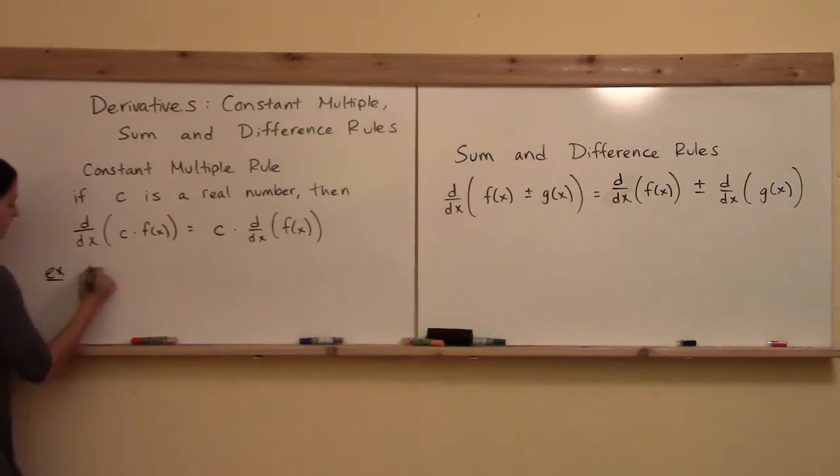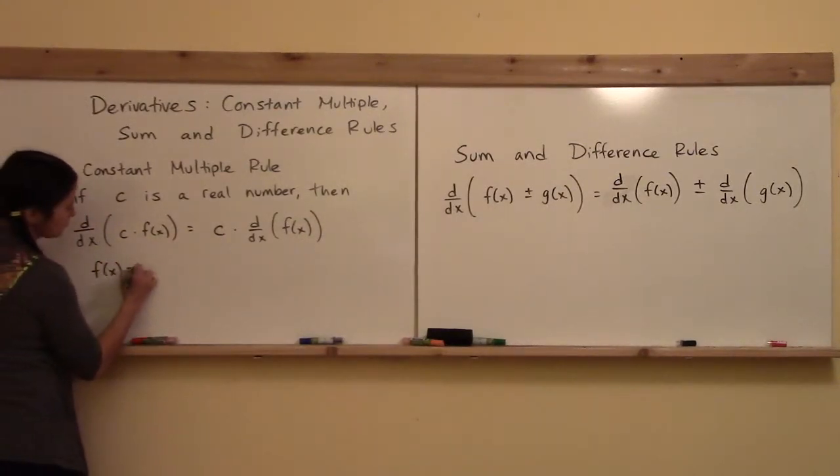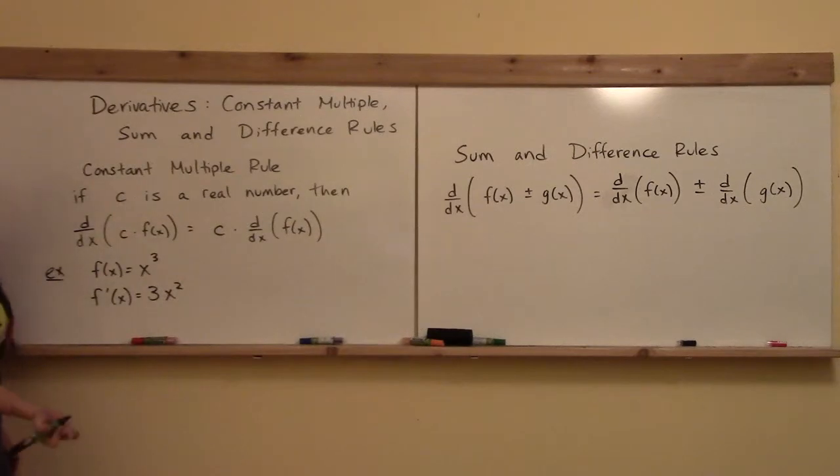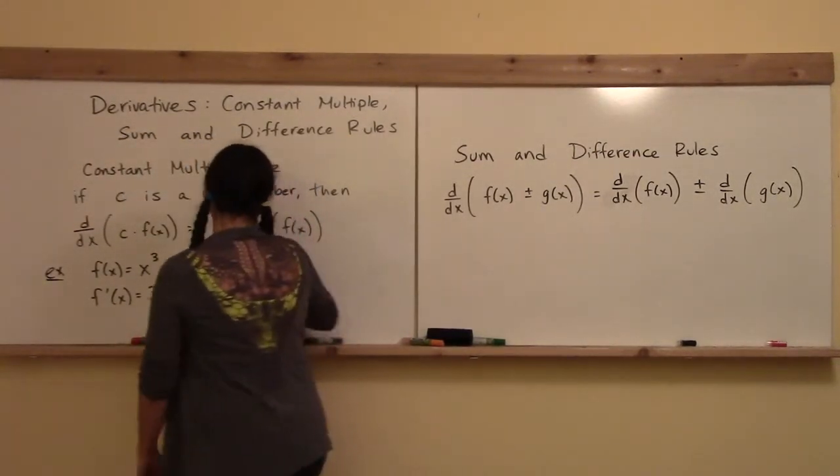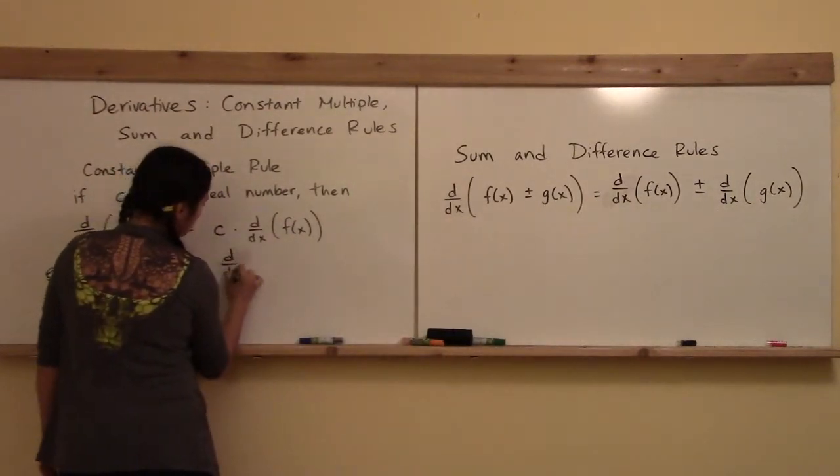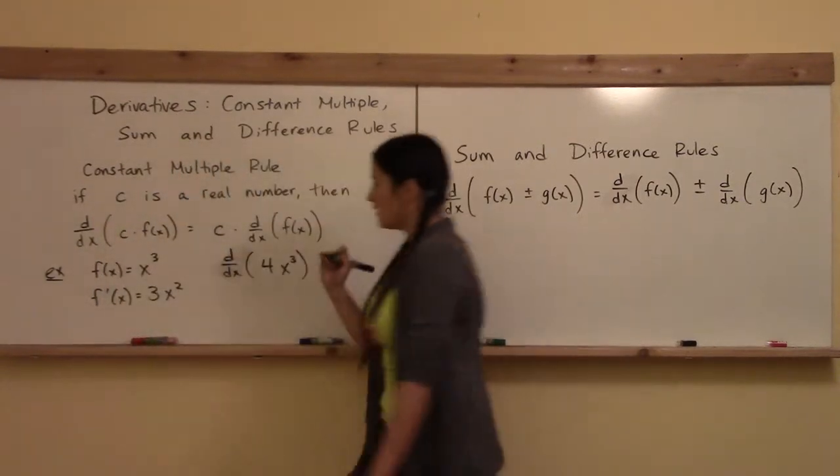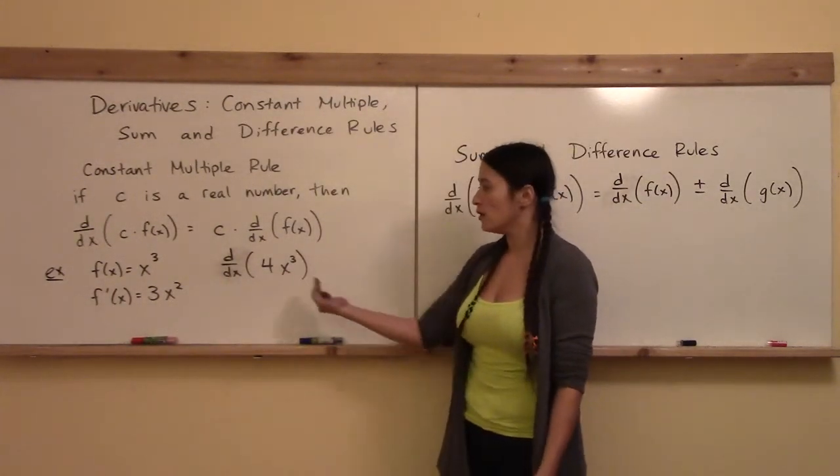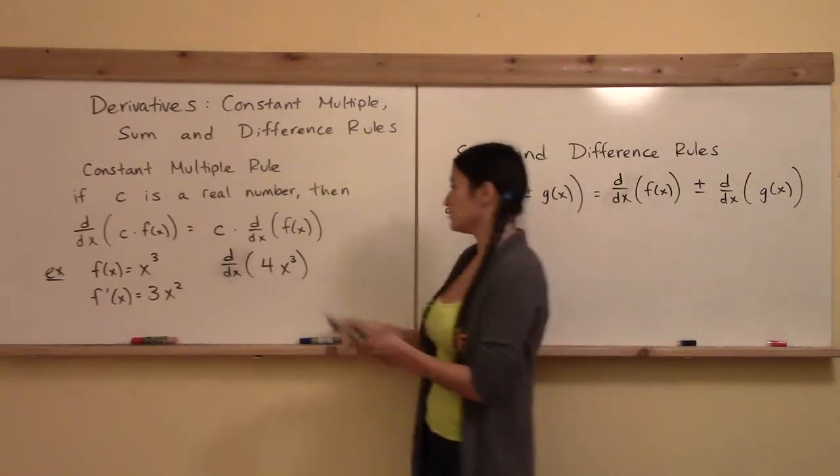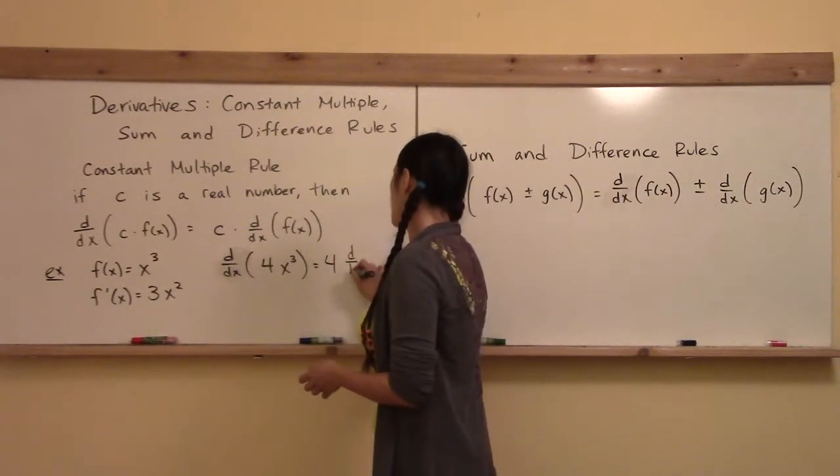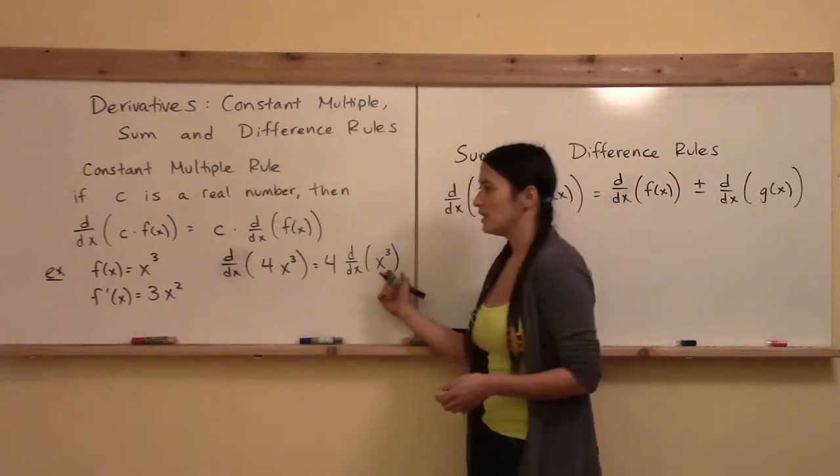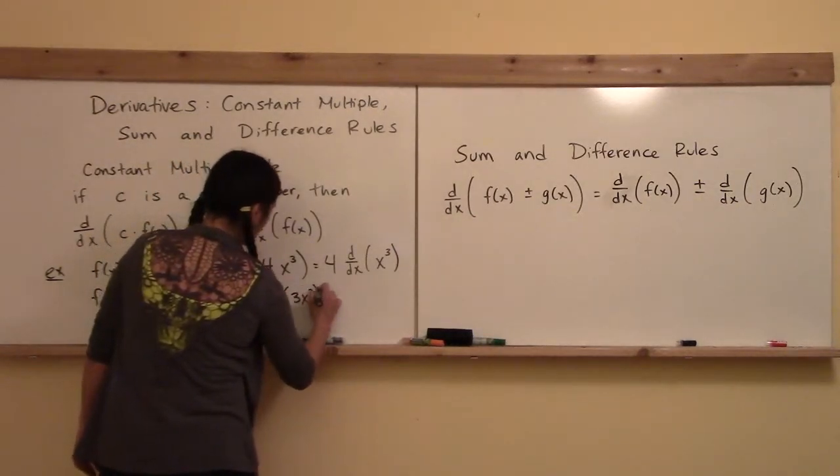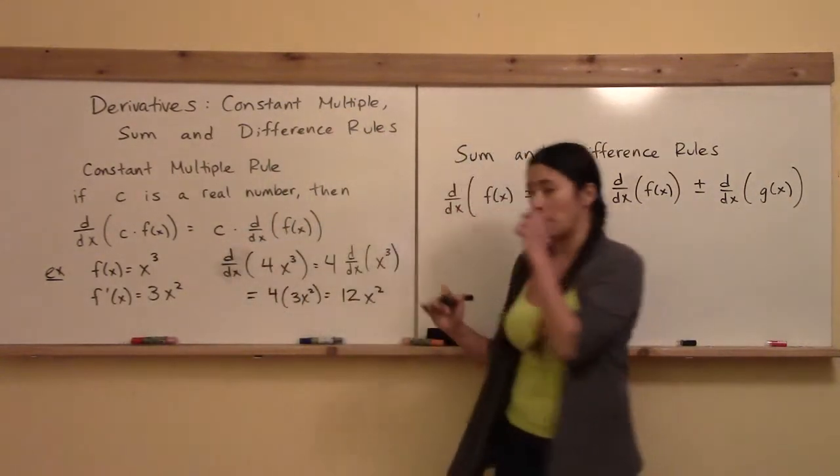Let's see a quick example of this. You should know from the power rule that if you have f(x) equals x³, its derivative f'(x) is 3x². Now let's say I want to take the derivative of d/dx of 4x³. According to the constant multiple rule, I can just take the 4 and put it right out front, and then consider the d/dx of x³. The d/dx of x³ is 3x², so the derivative is 4 times 3x², and 4 times 3 is 12, so I get 12x².